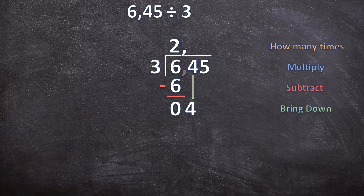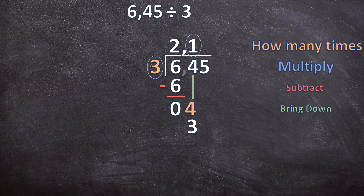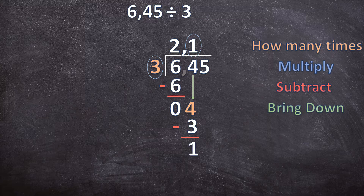We start with our steps all over again. How many times does three go into four? You can take one three out of four. Now we multiply: one times three is three. The next step is subtract: four minus three is one. The last step is bring down — we bring the next digit down.